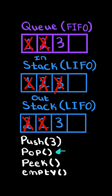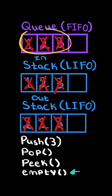Lastly, we do a pop operation where we pop the element from the out-stack. To check for an empty state, we check if both stacks are empty.